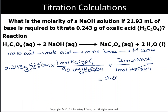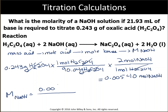From the calculation, the number of moles of NaOH is 0.00540 mol. To find the molarity of sodium hydroxide, divide moles by liters of solution: 0.00540 mol divided by 21.93 × 10⁻³ L gives a molarity of 0.246 M.